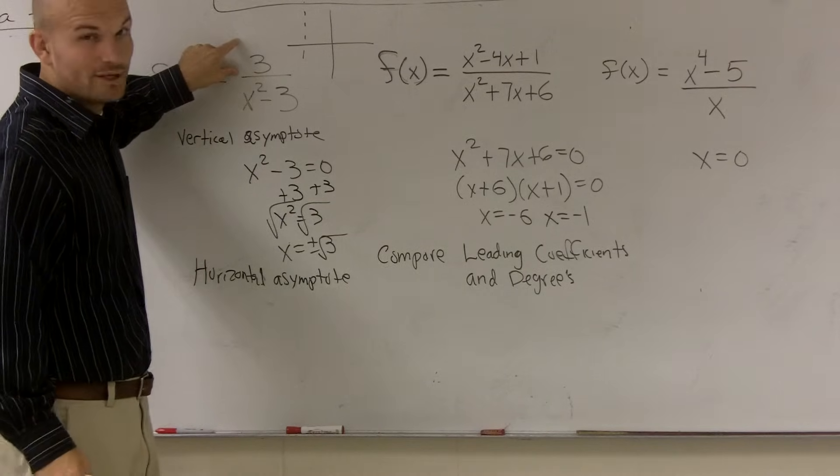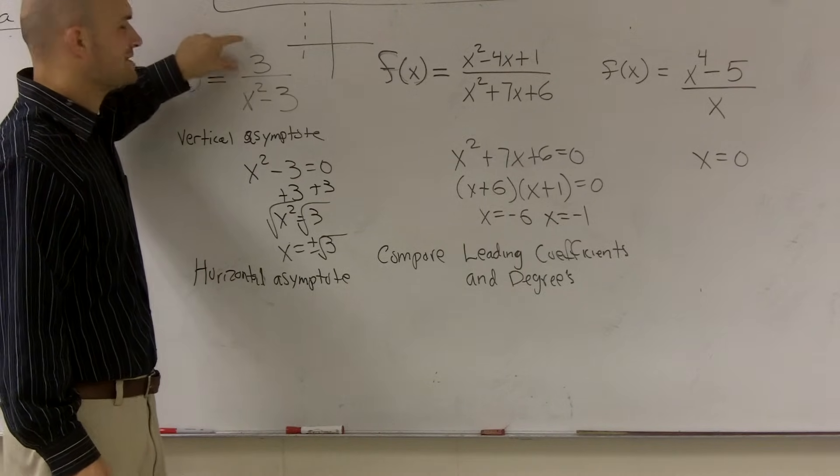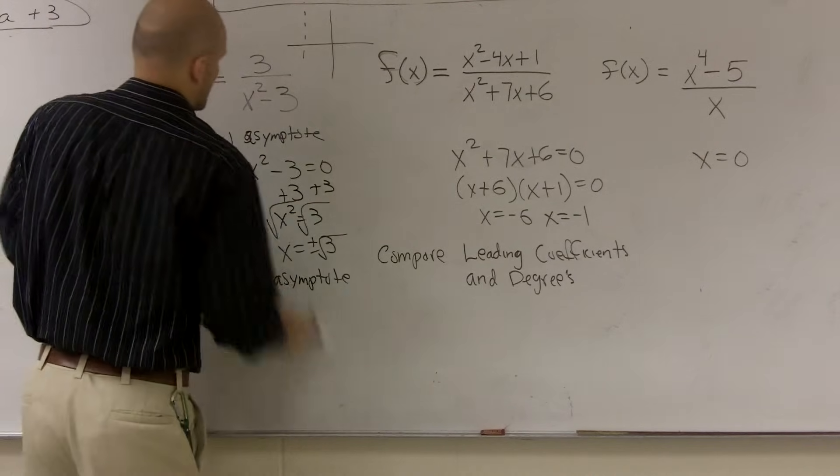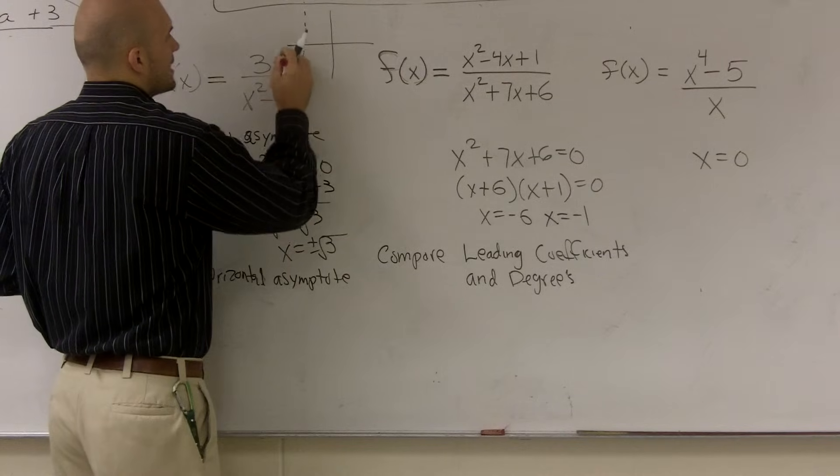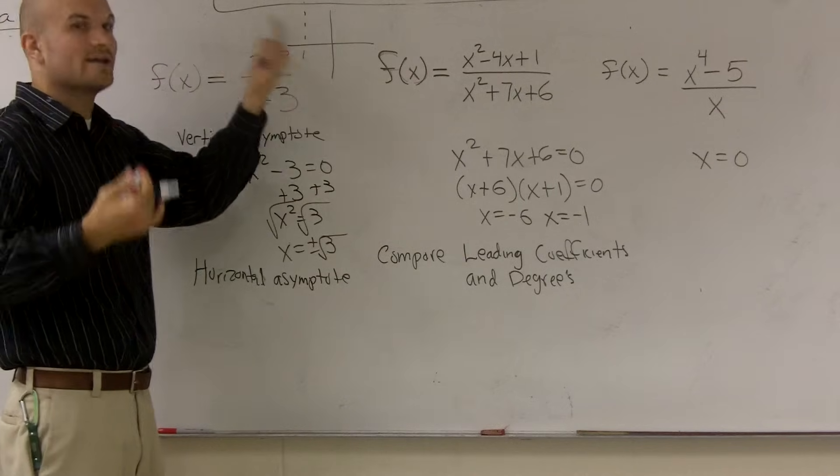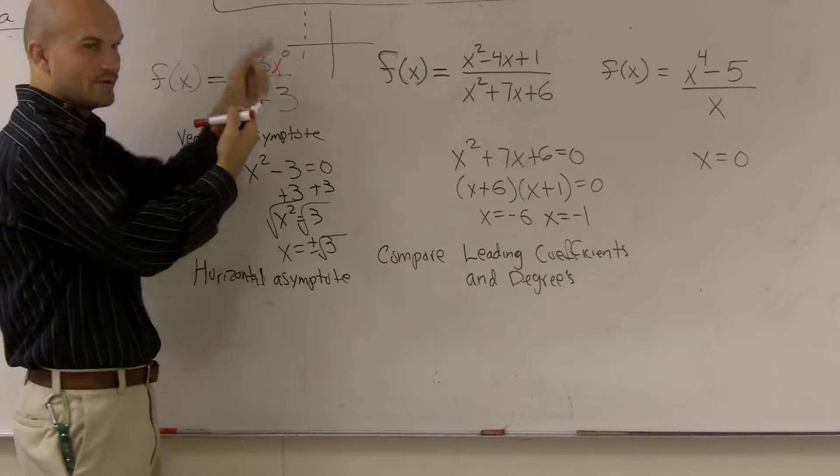Here, we have a polynomial, but it's a constant polynomial. A lot of you might say, well, there's no x right there. Well, I can put x to the 0 power because anything raised to the 0 power equals 1. 1 times 3 would be 3.